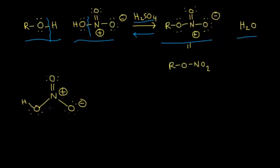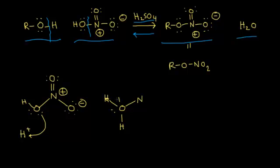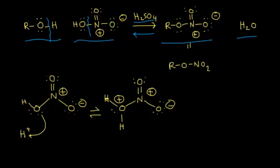Sulfuric acid is actually the stronger acid, so sulfuric acid is going to donate protons and the nitric acid is going to accept those protons — nitric acid is actually going to function as a base. A lone pair of electrons on the oxygen picks up that proton, so now oxygen has three bonds: two to hydrogens and one to this nitrogen, giving it a plus one formal charge. The nitrogen is still double bonded to one oxygen and bonded to another oxygen with a negative one formal charge. That was step one of our mechanism — an acid-base reaction.